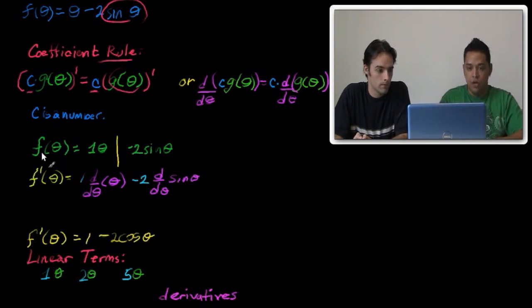So when I took f prime of theta, I took out d1, and I took the derivative of d over d theta of theta, which is 1, minus, I took out the 2, and then I took the derivative with respect to theta of sine of theta.